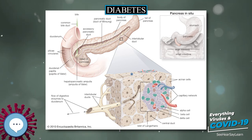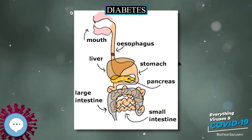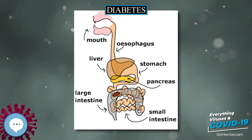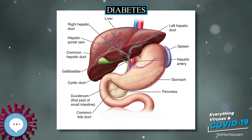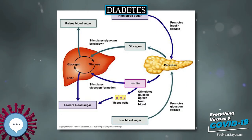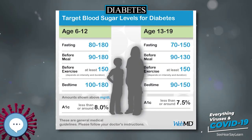Diabetes mellitus is characterized by recurrent or persistent high blood sugar, and is diagnosed by demonstrating any one of the following. A positive result, in the absence of unequivocal high blood sugar, should be confirmed by a repeat of any of the above methods on a different day. It is preferable to measure a fasting glucose level because of the ease of measurement and the considerable time commitment of formal glucose tolerance testing, which takes two hours to complete. According to the current definition, two fasting glucose measurements above 7.0 mmol/L is considered diagnostic for diabetes mellitus.